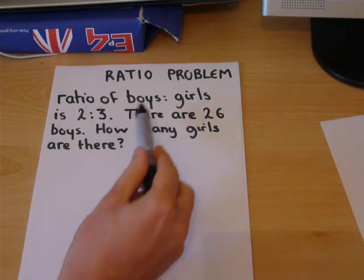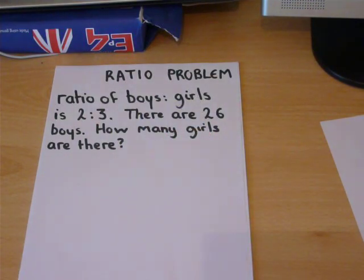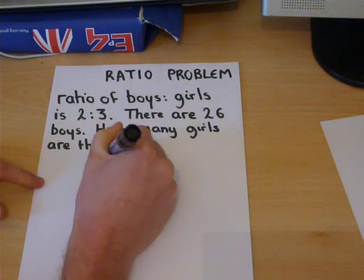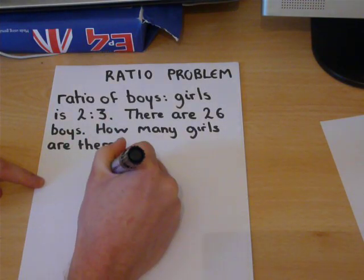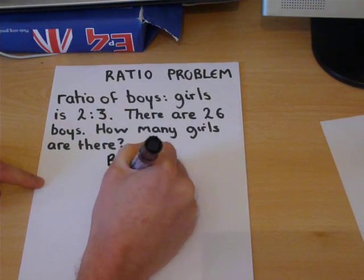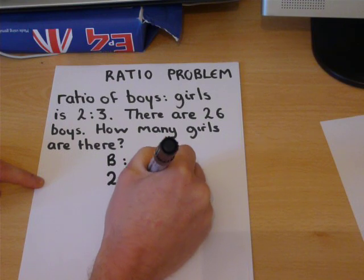So we are told a ratio of boys to girls, which is 2 to 3. This means for every two boys in the room, there are three girls.